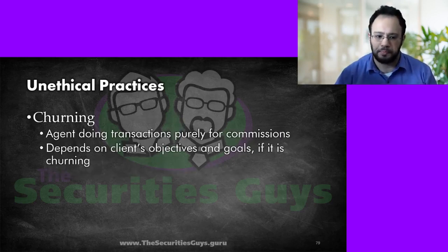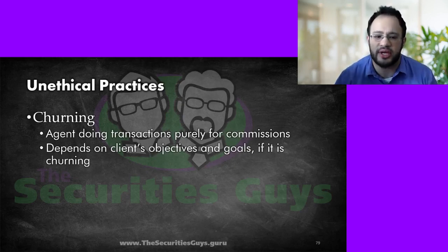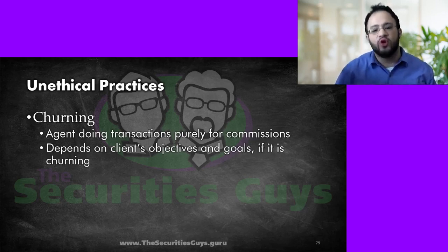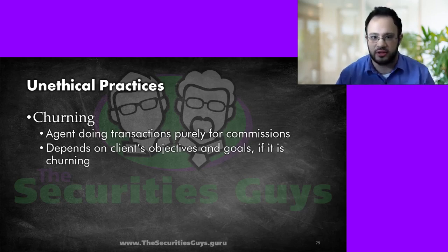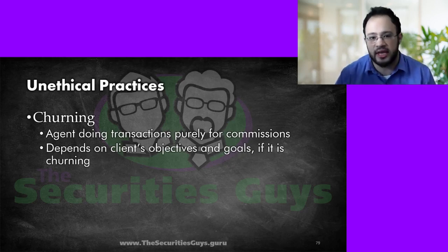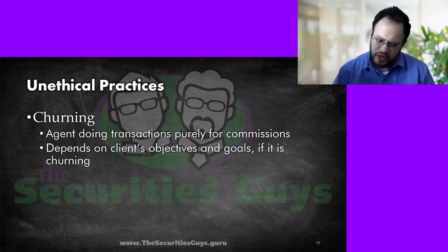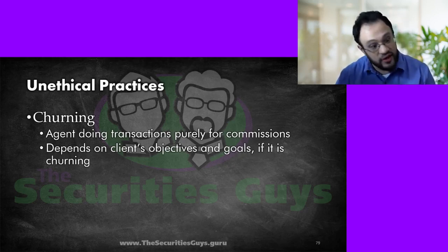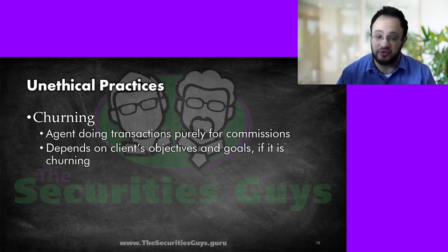Churning is the agent doing transactions purely for commissions, but it depends on the client's objectives and goals — you have to check it against those. It isn't a specific number of transactions. I always give two examples. People think one transaction a month must be fine — well, I can give you an example where one transaction a month is churning. And 30 transactions a month might seem too much, but I can give you an example where 30 transactions a month is just fine. For instance, I've got this rich friend who just sold his business for a lot of money.